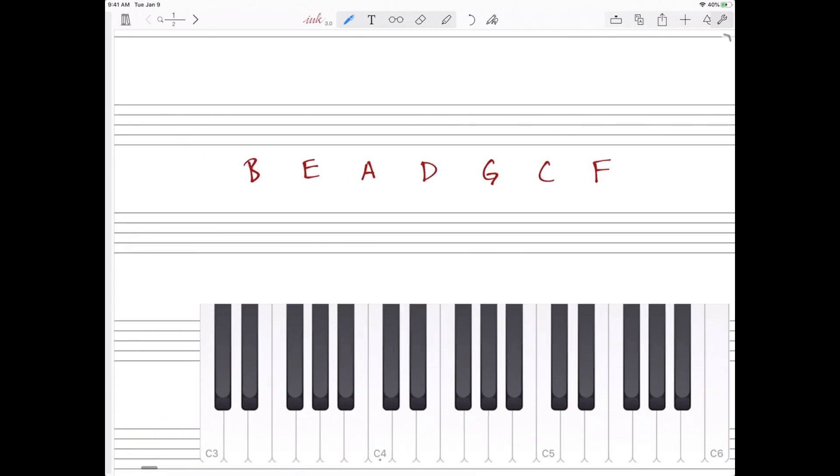I put them in this order because it's easier to remember B, E, A, D, G, C, F - bead, G, C, F. Also, it's the same as the order of flats. The order of flats is the same as the order of sharps, but it starts from the left, or starts from B flat.